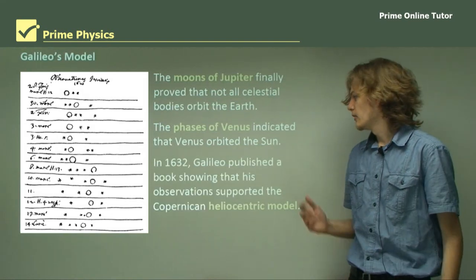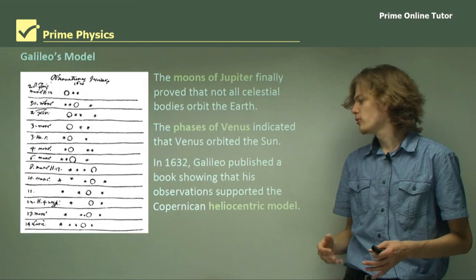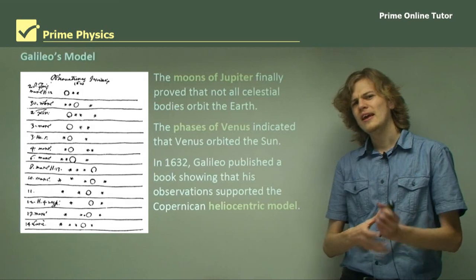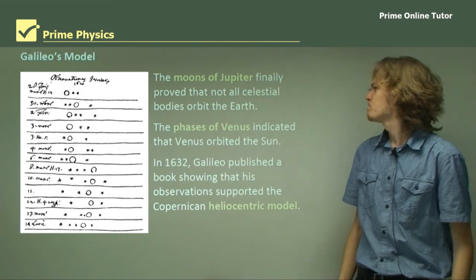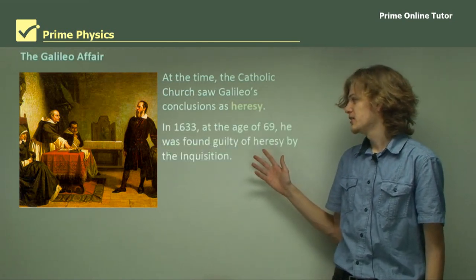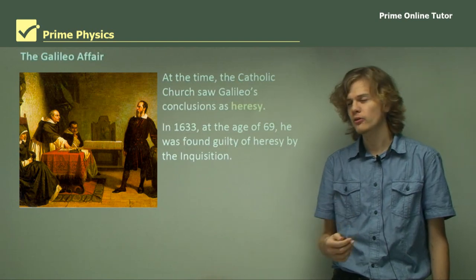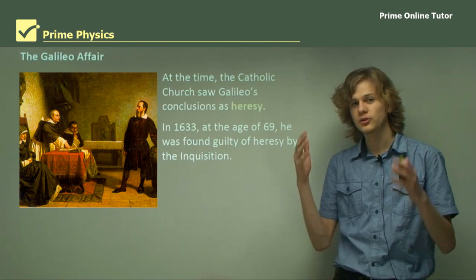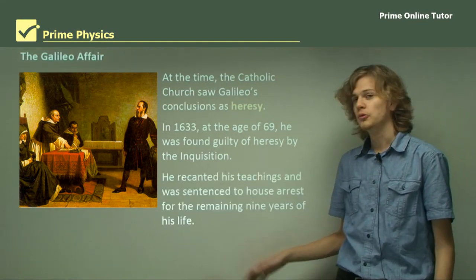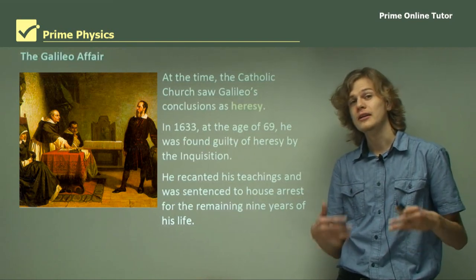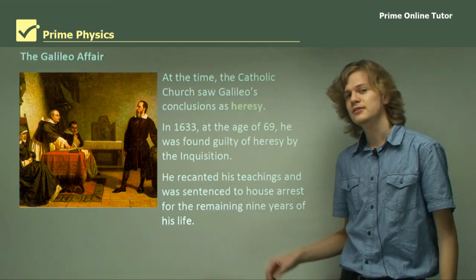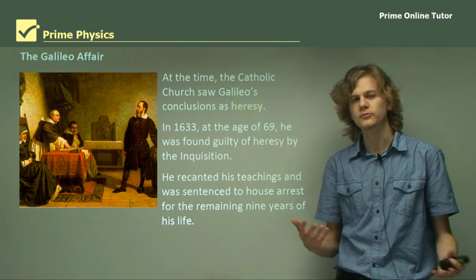In 1632, Galileo published a book showing his observations supported a heliocentric model, just like Copernicus's. But not everyone was happy with that idea. The Catholic Church saw Galileo's conclusions as heresy. In 1633, at the age of 69, he was found guilty of a grave suspicion of heresy by the Inquisition. He was forced to recant all his teachings on the heliocentric model of the universe — publicly denying that he ever meant such a thing — and was then sentenced to house arrest for the rest of his life. He died nine years later.